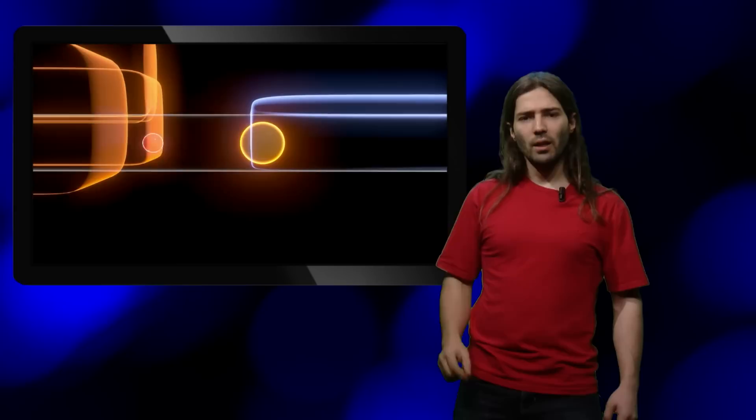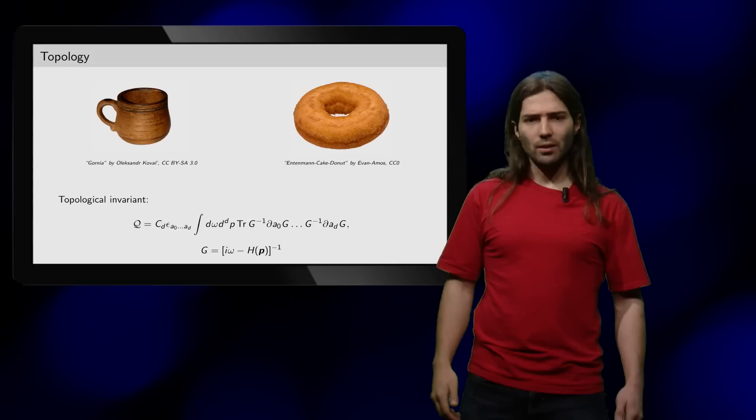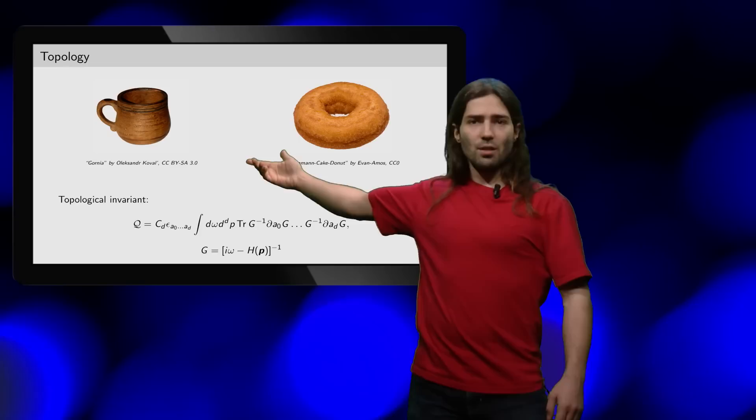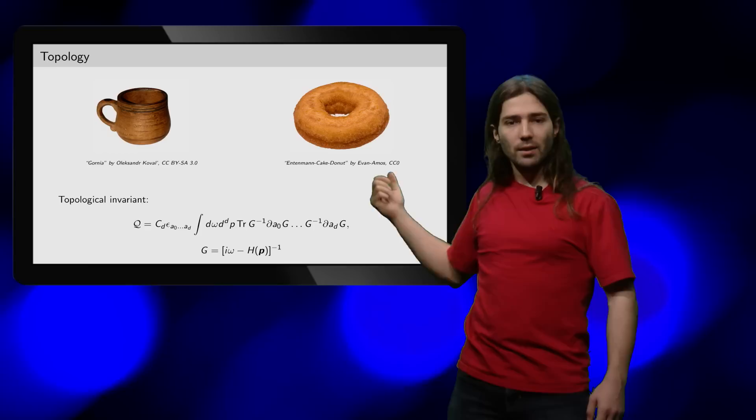So why exactly do these systems have robust properties? The answer to this is topology. It studies everything that cannot be changed gradually. This mug and this doughnut are exactly identical from a topological point of view since they have the same number of holes.